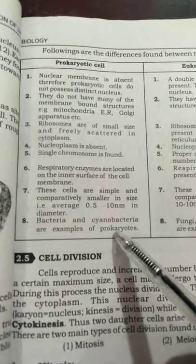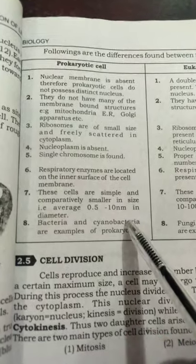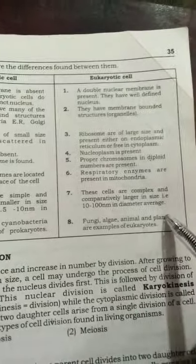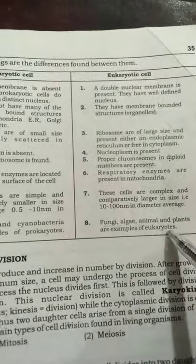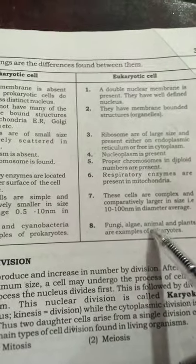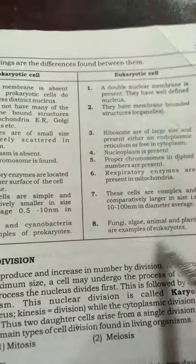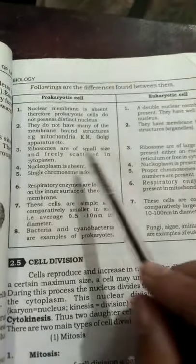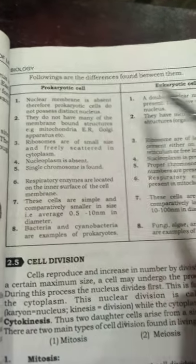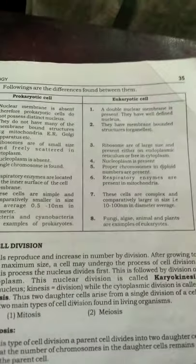Examples of prokaryotes are bacteria and cyanobacteria. Examples of eukaryotes include fungi, algae, animals, and plants. To summarize, the key difference is the presence or absence of a proper nucleus: prokaryotes lack a proper nucleus, while eukaryotes have a proper nucleus enclosed in a nuclear membrane with nuclear material.